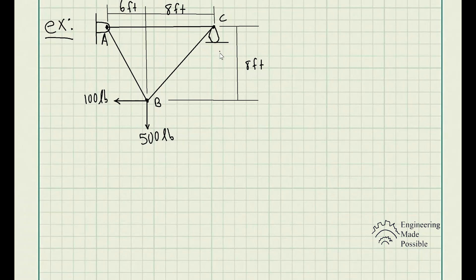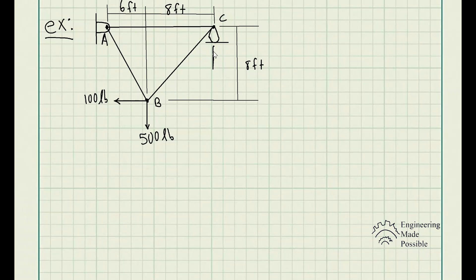One thing to note are the supports of this structure. This is a truss with cylinder members — either rods or beams. At point A we have a hinge, and at point C we have what's called a rocker. You would refer to the appropriate reactionary forces for each: a rocker gives a vertical reaction force Fcy, and the hinge gives both vertical and horizontal reactions, FAy and FAx.